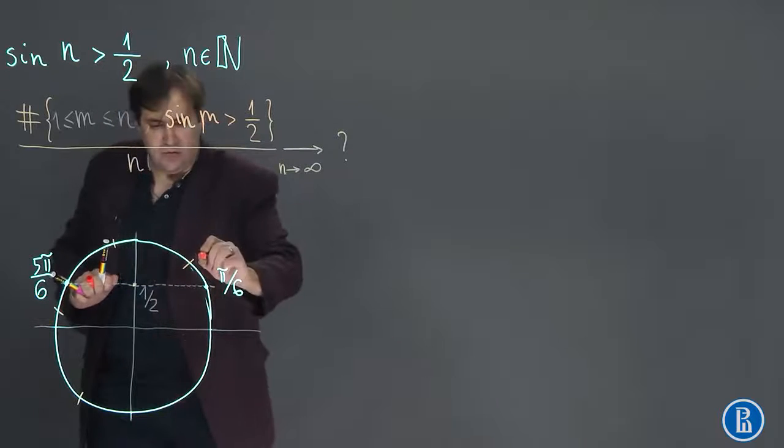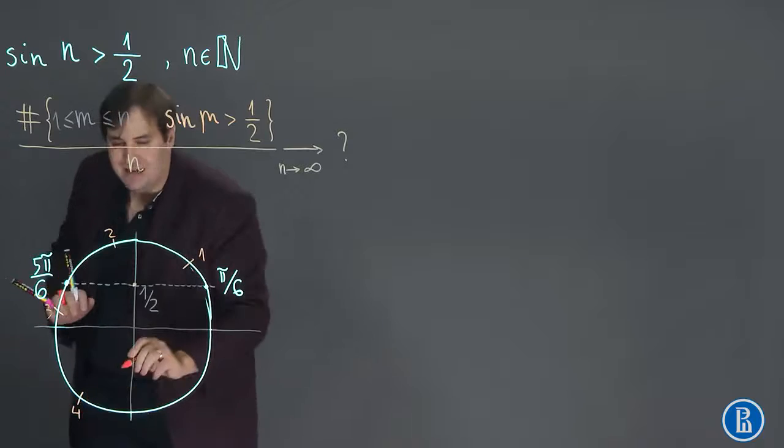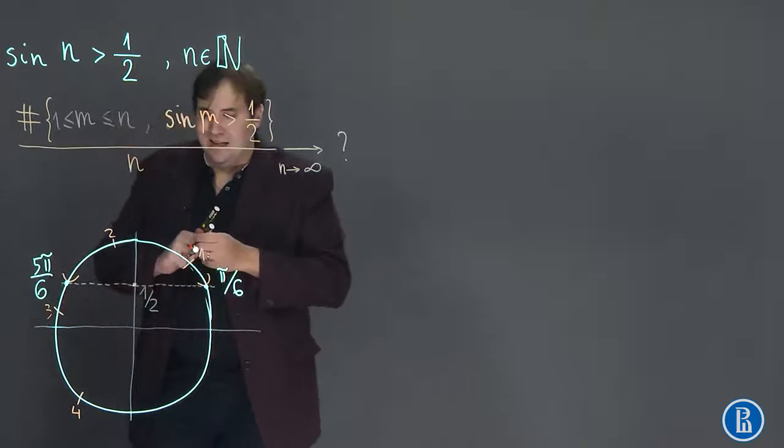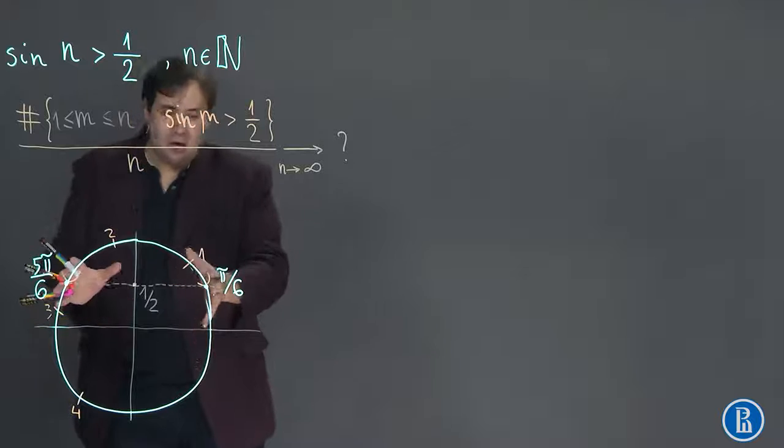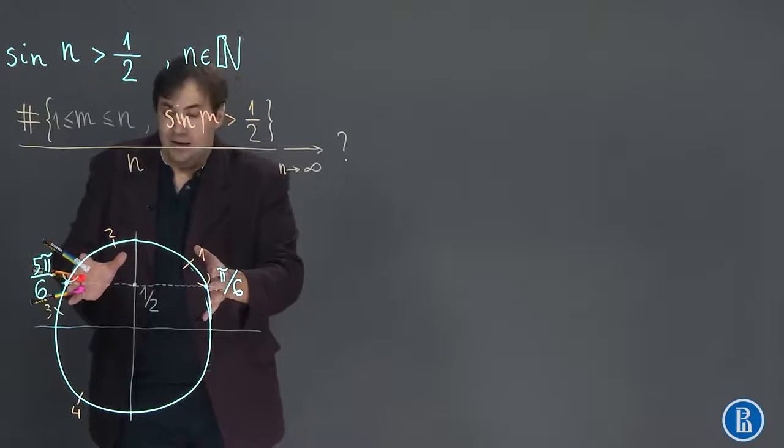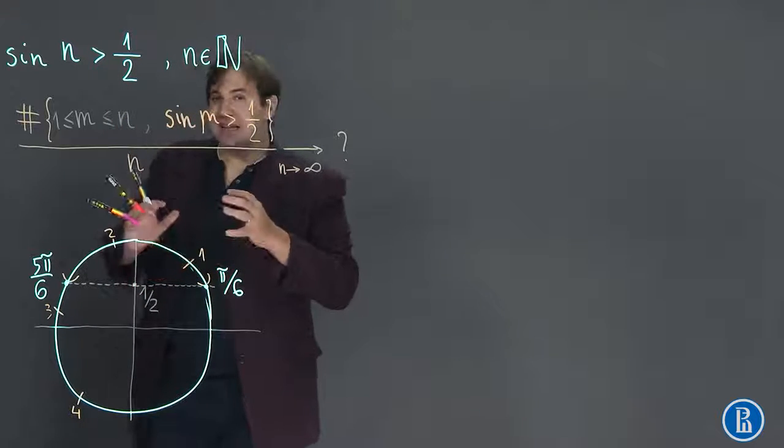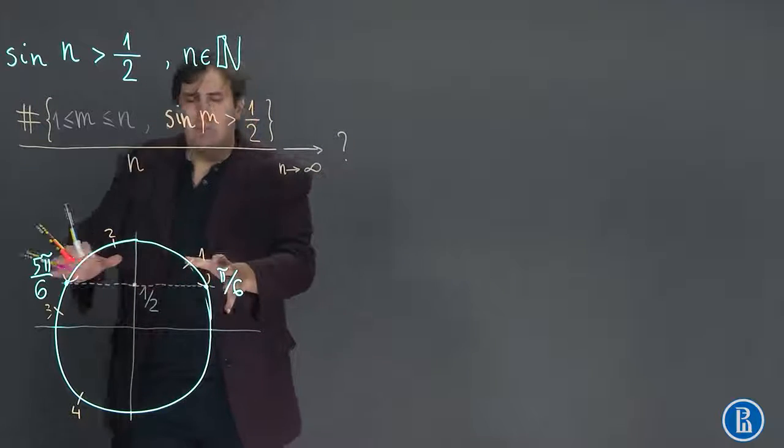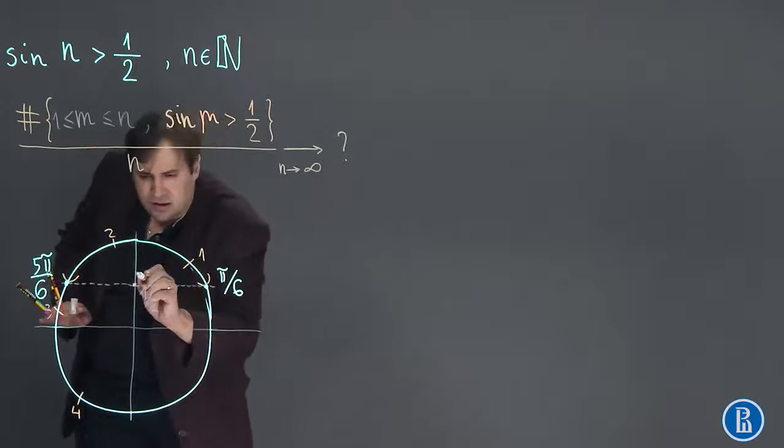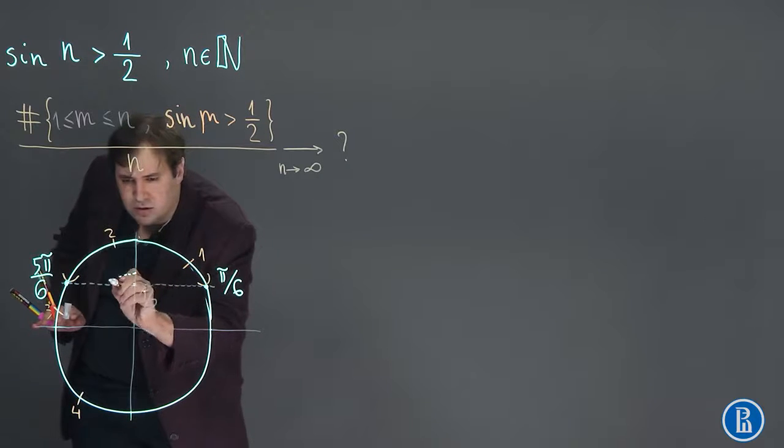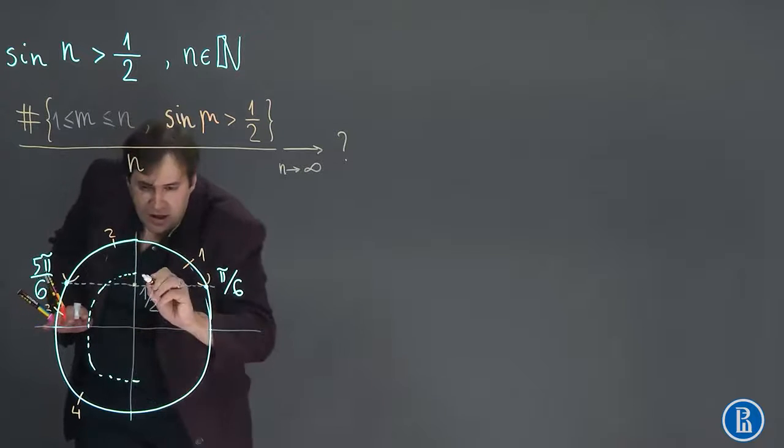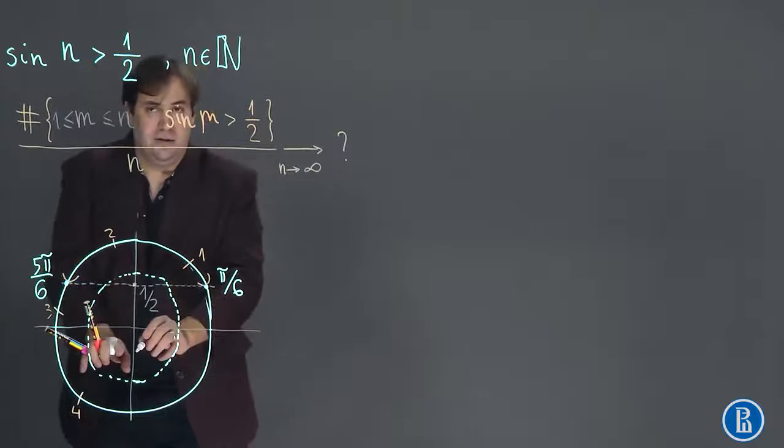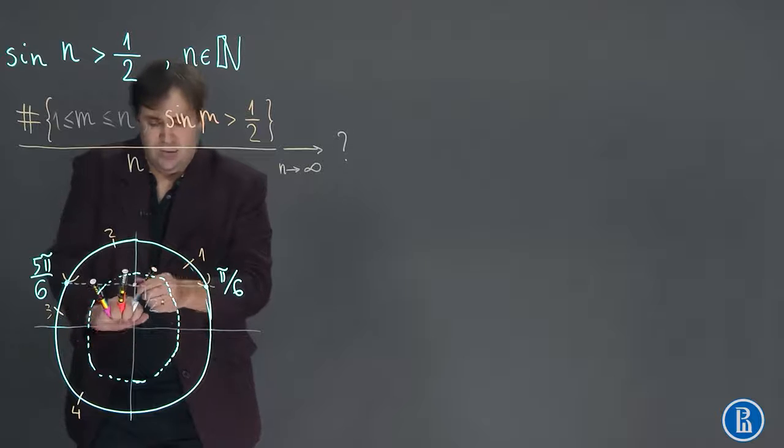So how do we determine how often the integer numbers 1, 2, 3, 4 and so on get into this interval? In order to determine that, let us shrink the circle. Now the length of the circle is equal to 2π. Let us shrink the circle so that its length becomes equal to 1. I will draw a large circle and ask you to imagine that its length is equal to 1.